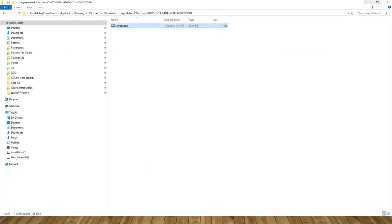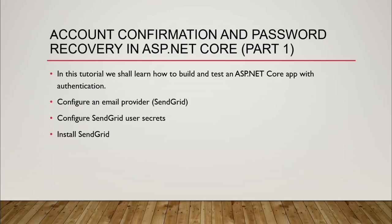Before leaving, in this first part of the tutorial we have learned how to build and test an ASP.NET Core app with authentication by writing and running the script on a console command. We've known how to configure an email provider using SendGrid, how to install SendGrid, and how to configure the SendGrid user secrets and where to find those secrets in the secret store.